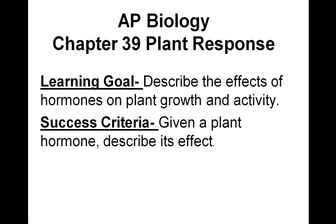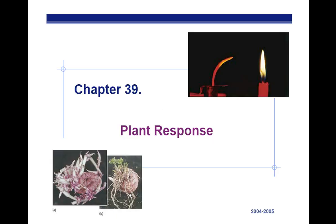AP Biology, Chapter 39, Plant Response. You may have noticed things like plants moving toward the light, and you may have wondered why they can do that. Today you're going to learn about some of the ways that plants respond to their environment using things like hormones.